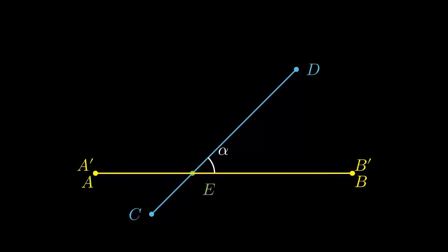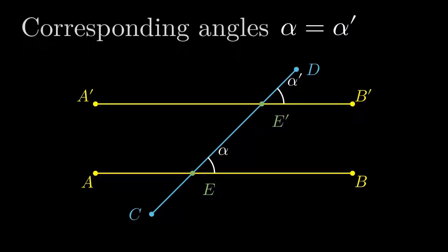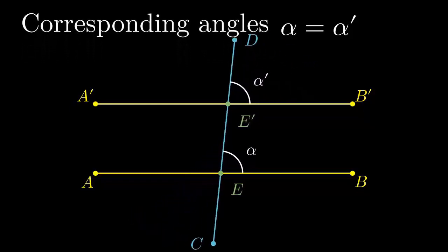I move A' B' away from AB, but keep them in parallel. Here the measure of the angle alpha and alpha' are equal. These angles are called corresponding angles.